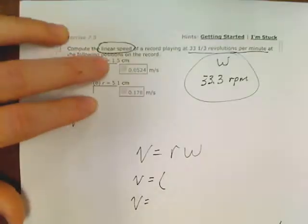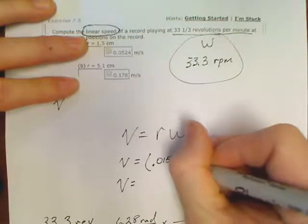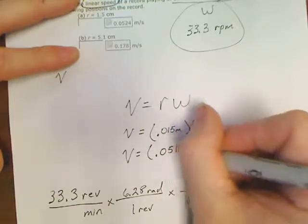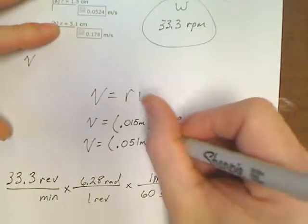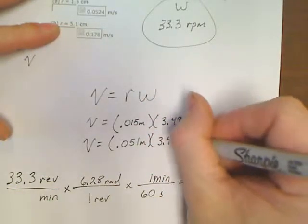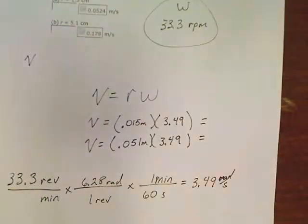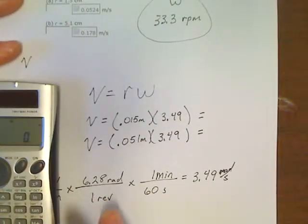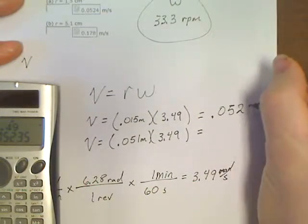And now all I've got to do is come back up here and do this problem twice. I'm going to do it once for one and a half centimeters, which would be 0.015 meters. Then the other time I'll do it for 0.051 meters. 3.49, 3.49 radians per second. So all we've got to do is multiply. And we've got both these answers at this time. 0.015 times 3.49, 0.052 meters per second.